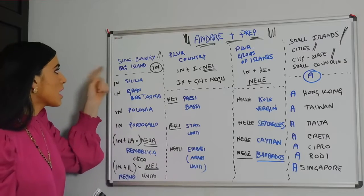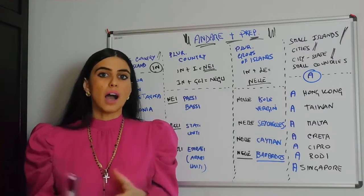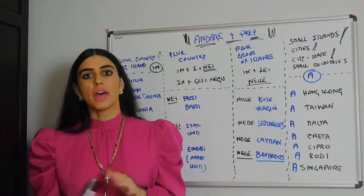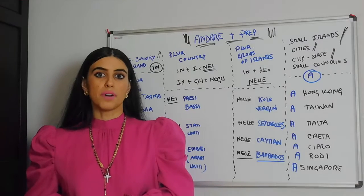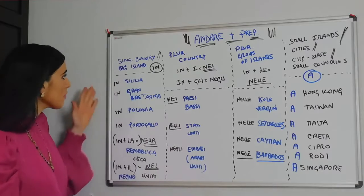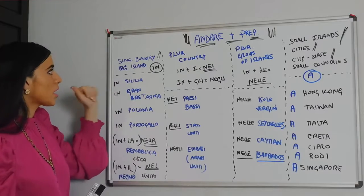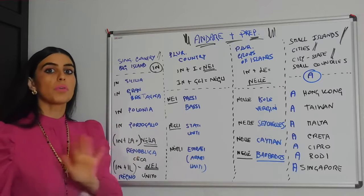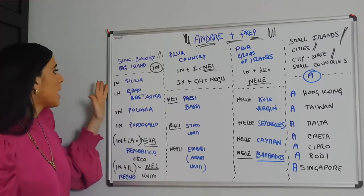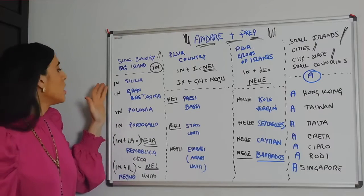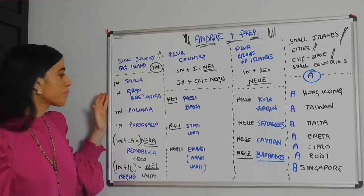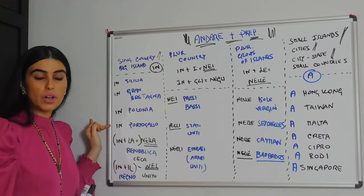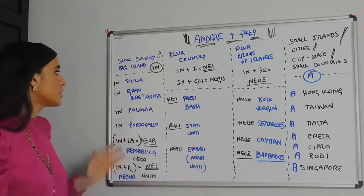Now, we also have big islands in this column. For singular countries and big islands, we use the preposition IN — without anything else. So we have: in Sicilia, in Gran Bretagna, in Polonia, in Portogallo.